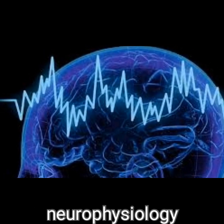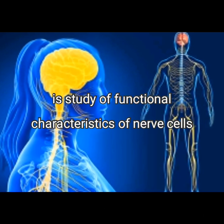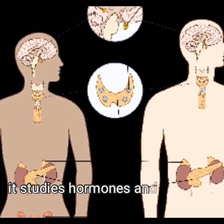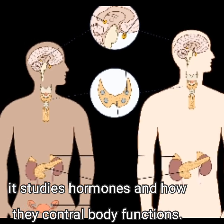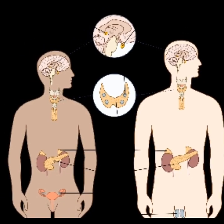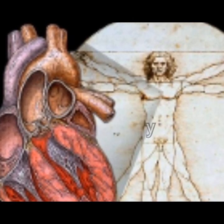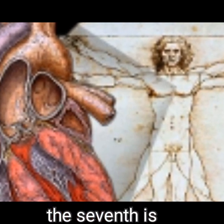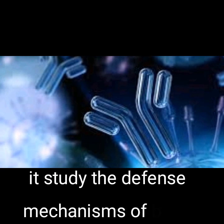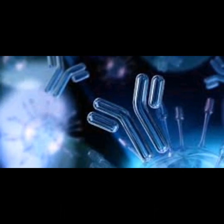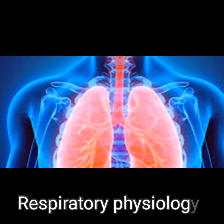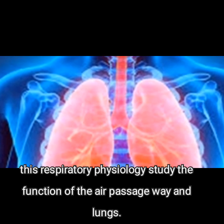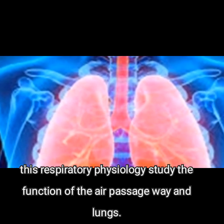The fourth is neurophysiology, which studies the functional characteristics of nerve cells. The fifth is endocrinology, which studies hormones and how they control body function. The sixth is cardiovascular physiology, which studies the function of the heart and blood vessels. The seventh is immunology, which studies the defense mechanisms of the body. The eighth is respiratory physiology, which studies the function of the air passageways and lungs.